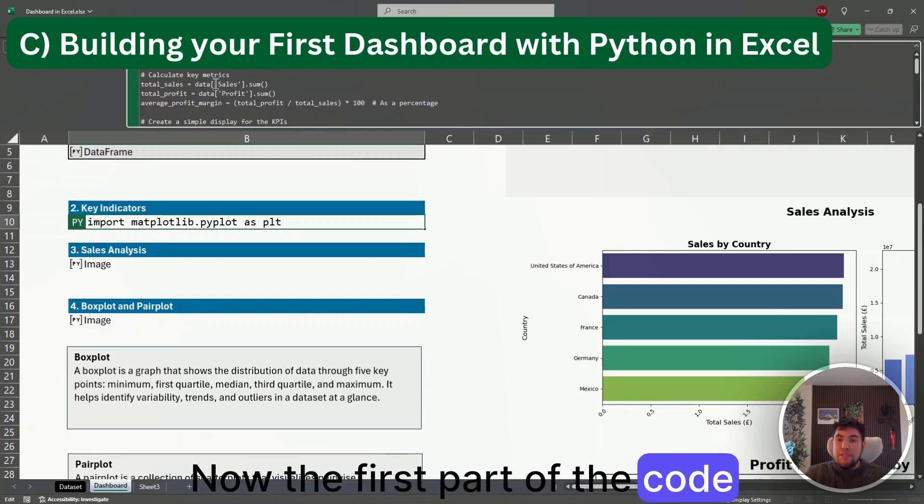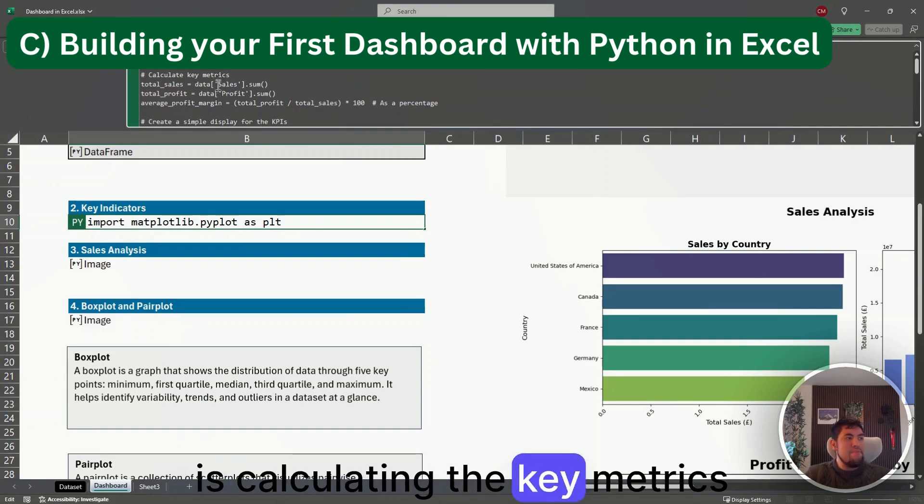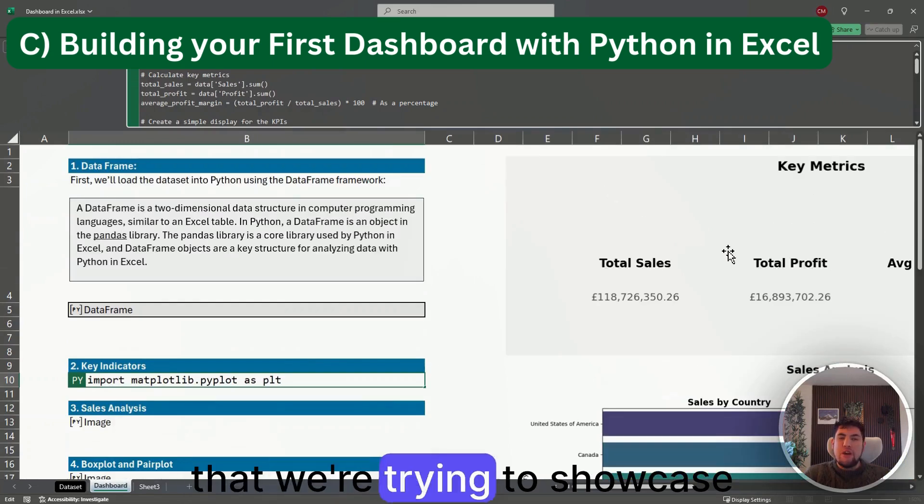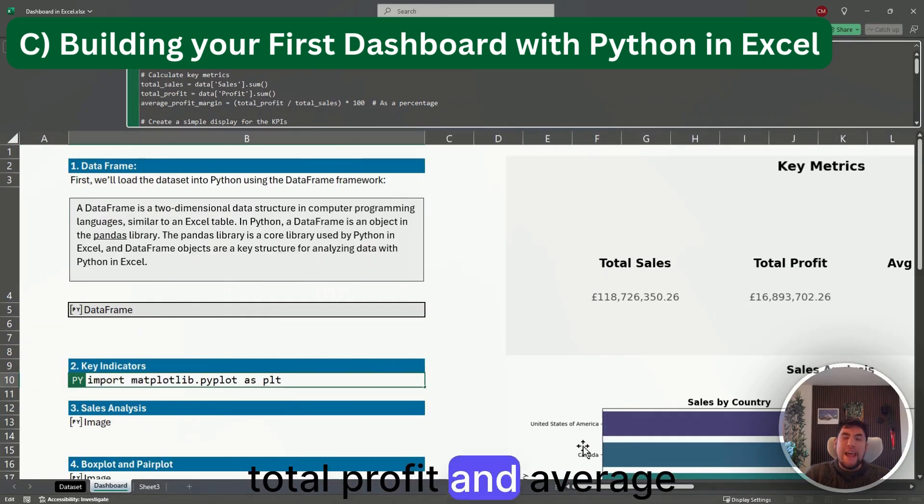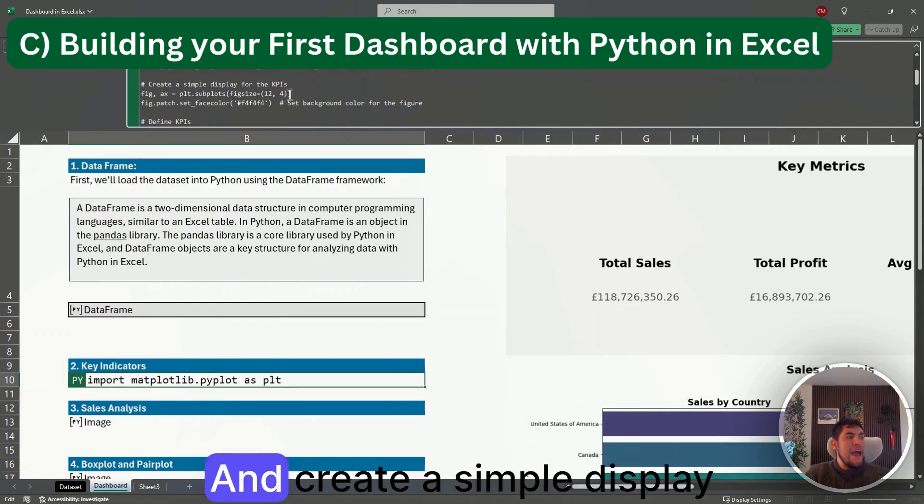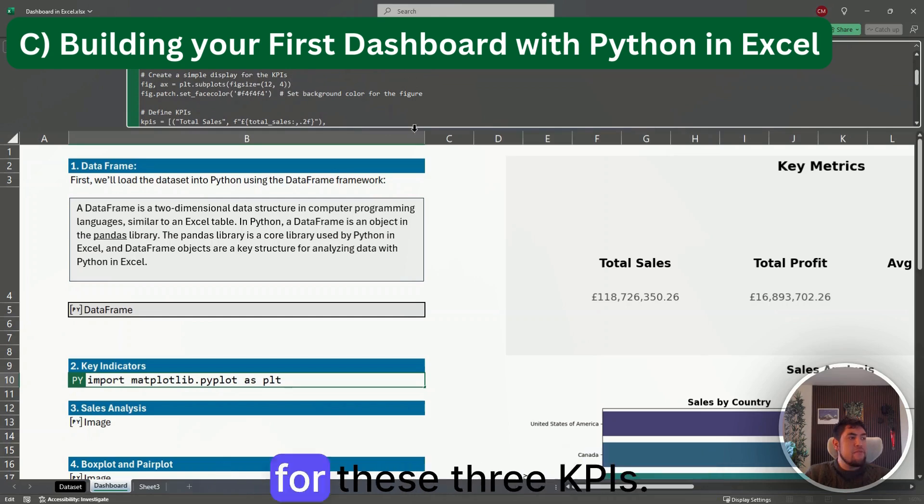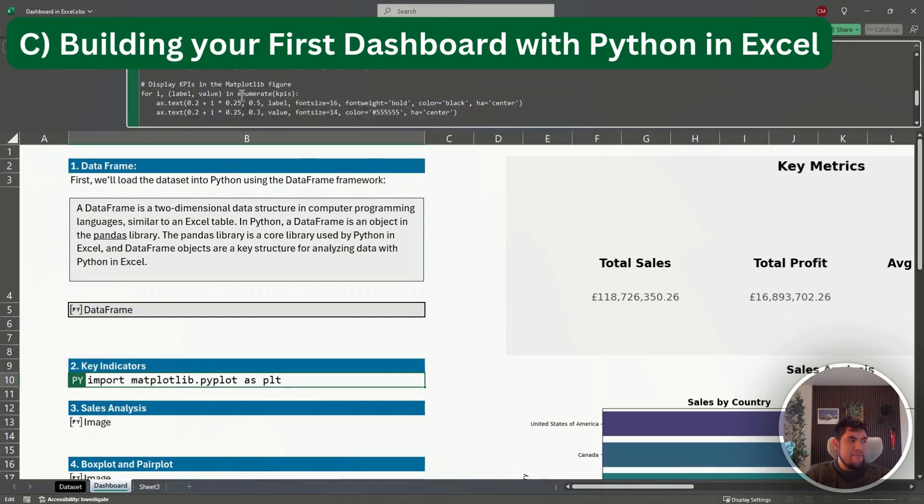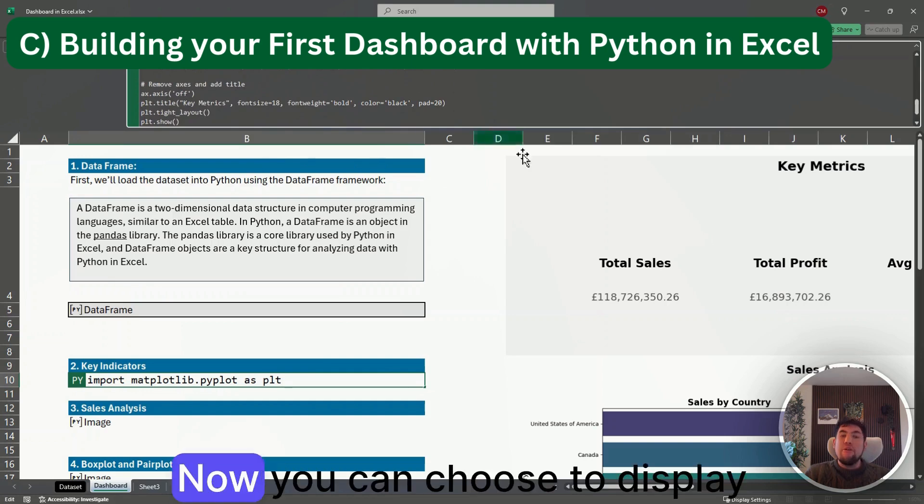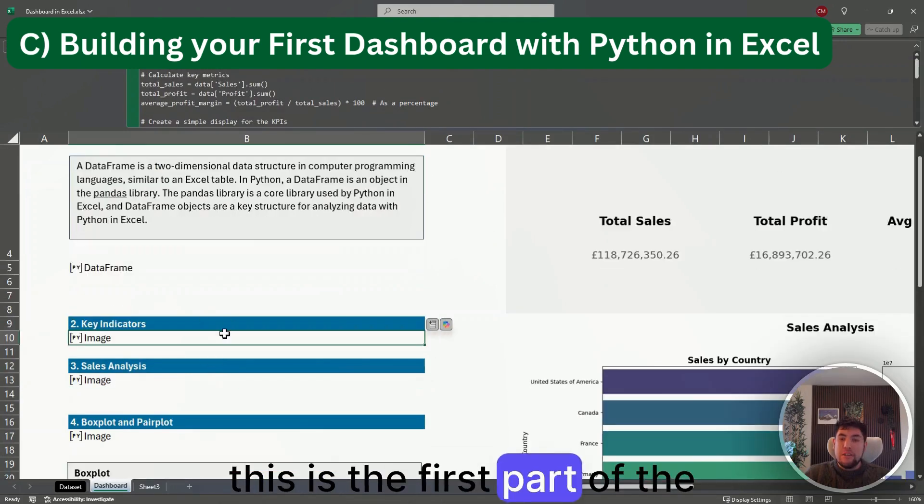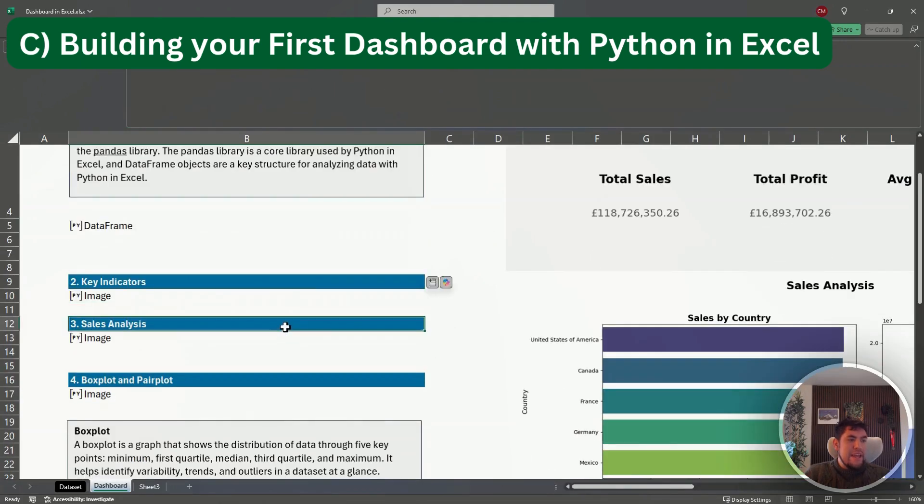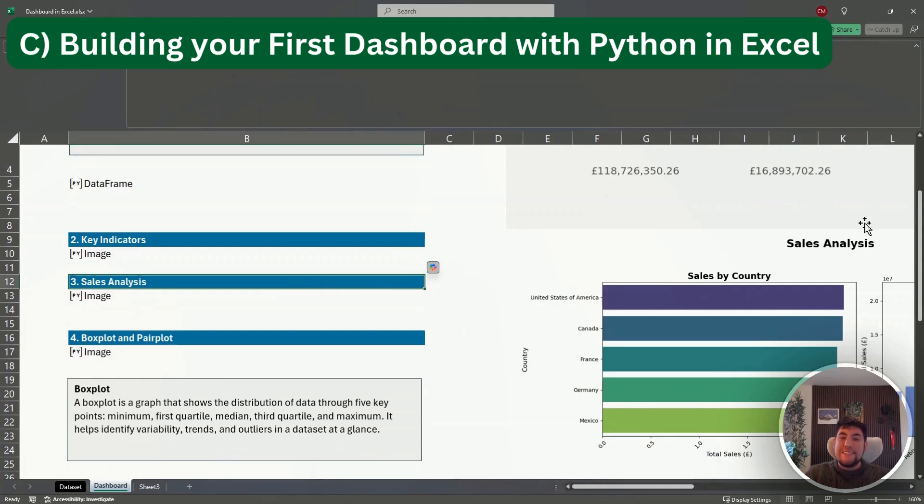The first part of the code is calculating the key metrics that we're trying to showcase in here, like total sales, total profit, and average margin, and create a simple display for these three KPIs. You can choose to display other different KPIs that are important for your business. This is the first part of the code.